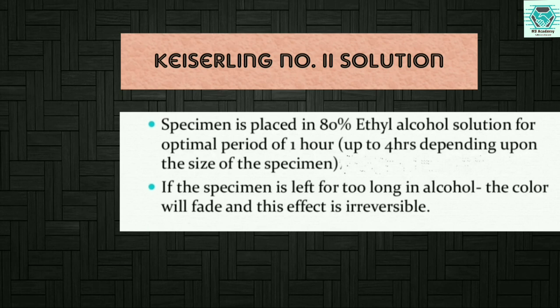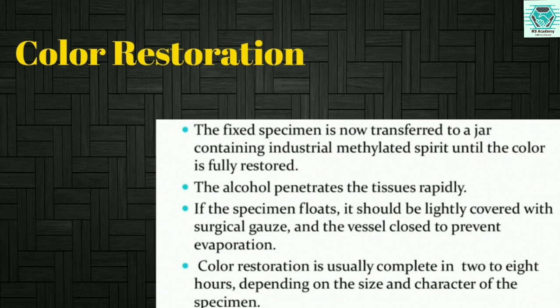So how does color restoration occur? The fixed specimen is transferred to a jar containing industrial methylated spirit until the color is fully restored. The alcohol penetrates the tissues rapidly. If the specimen floats, it should be lightly covered with surgical gauze and the vessel closed to prevent evaporation. Color restoration is usually complete in two to eight hours, so the timings are very important regarding the fixation and color restoration process.